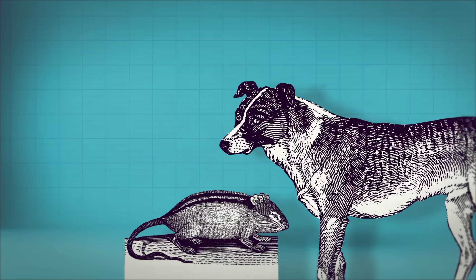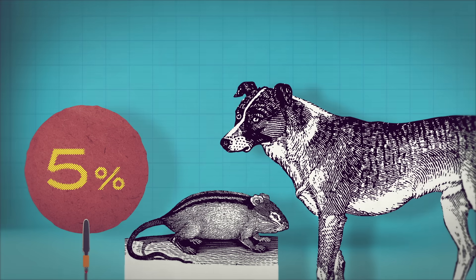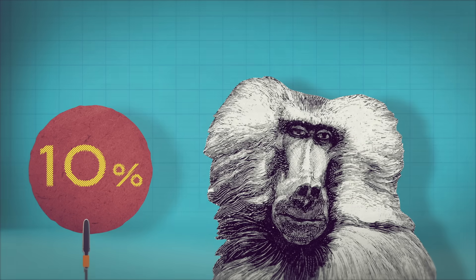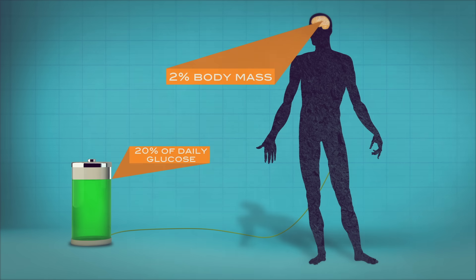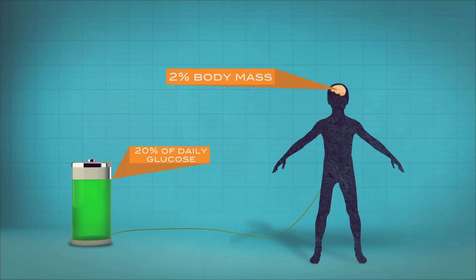Rodent and canine brains consume 5% of total body energy. Monkey brains use 10%. An adult human brain, which accounts for only 2% of the body's mass, consumes 20% of daily glucose burned.